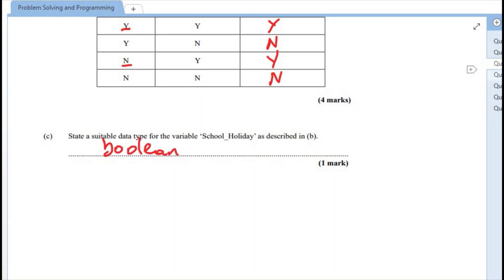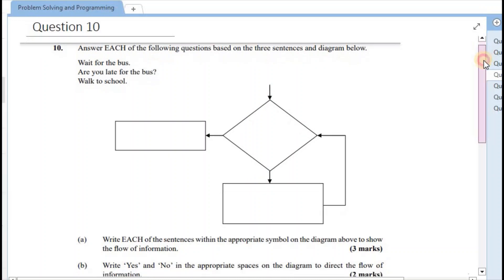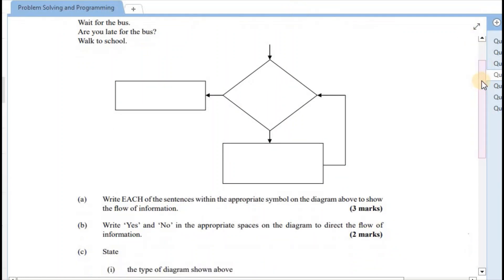Alright, moving on to question number 10. Answer each of the following questions based on the three sentences on the diagram below. So we have three sentences here on the diagram. So A says that we must write each of the sentences within the appropriate symbol on the diagram above to show the flow of information.